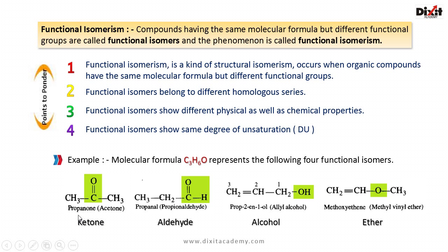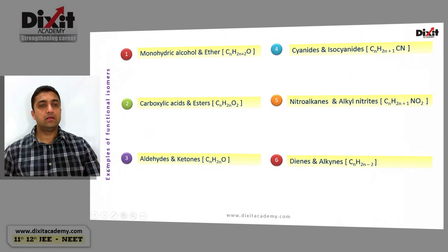Acetone is a ketone — the functional group present is carbonyl. Propanal is an aldehyde — the functional group is the aldehyde group directly bonded to an sp3 hybridized carbon atom. Methyl vinyl ether is an ether — the functional group is the C-O-C ether linkage.